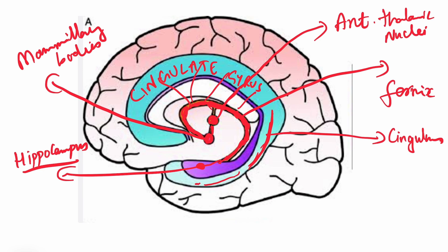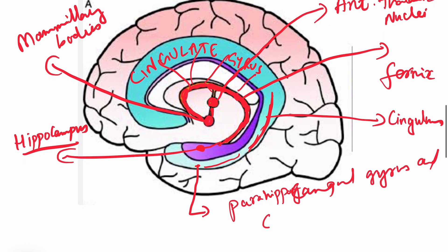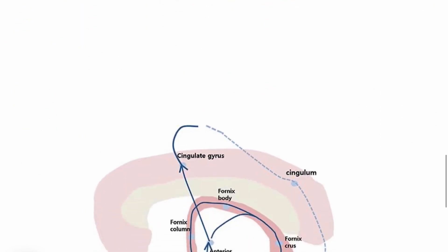So it will ultimately end into the parahippocampal gyrus and the anterior entorhinal cortex. Then finally it will come back to the hippocampus. So we can see this circuit: it starts from the hippocampus, goes to the hypothalamus, thalamus, and cingulate gyrus, and comes back to the hippocampus.